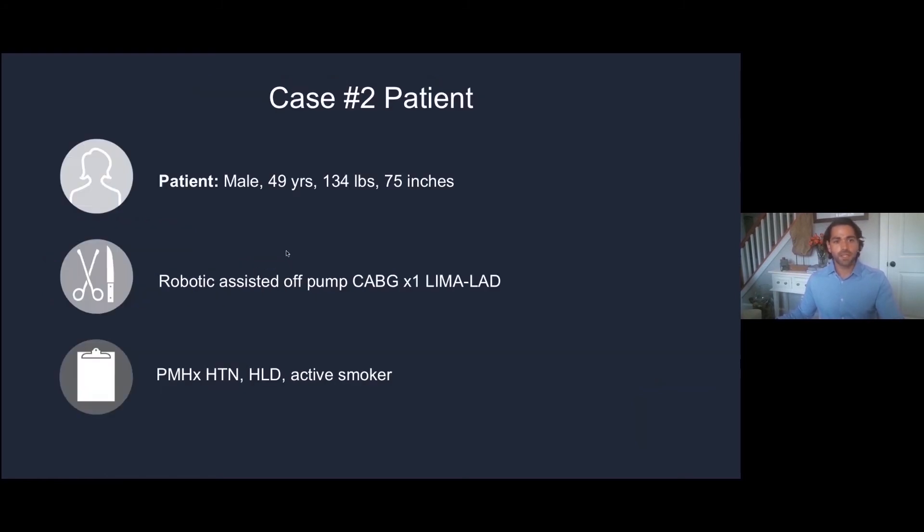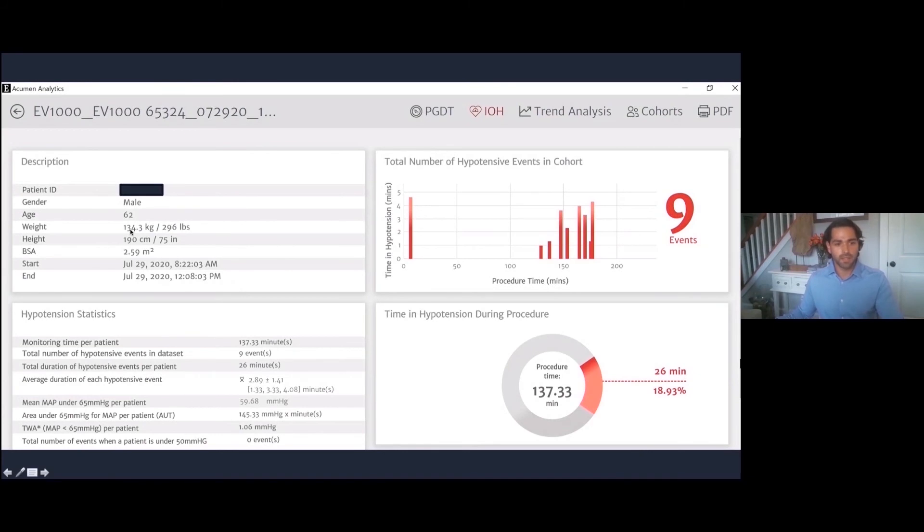Let's talk about a second case. This is a 49-year-old with a past medical history of hypertension, hyperlipidemia, active smoker. He underwent a robotic-assisted off-pump CABG times one. This is going to be just the operating room, and we're going to do more of a simulation. Let's look at his Acumen Analytics page first. 137-minute case, 26 minutes of hypotension, about 19% hypotension during that time. Overall fast case, not a lot of minutes of hypotension. High percentage, but relatively pretty good there. MAP under 50, none. Average MAP under 65 was 59, not so bad. Average duration of events about three minutes, less than three minutes, so treated very quickly.